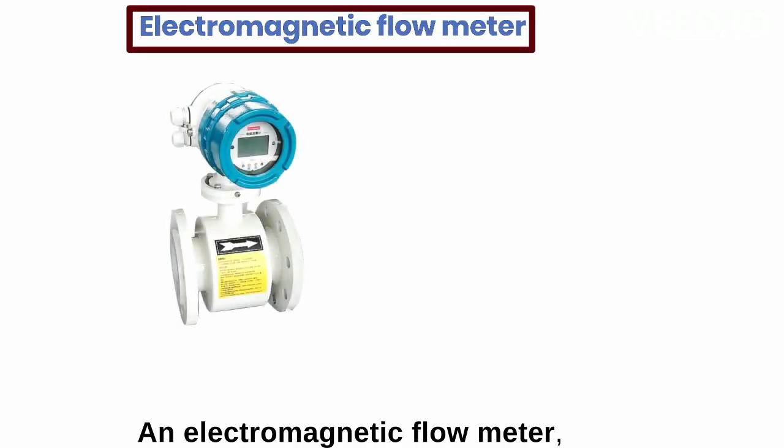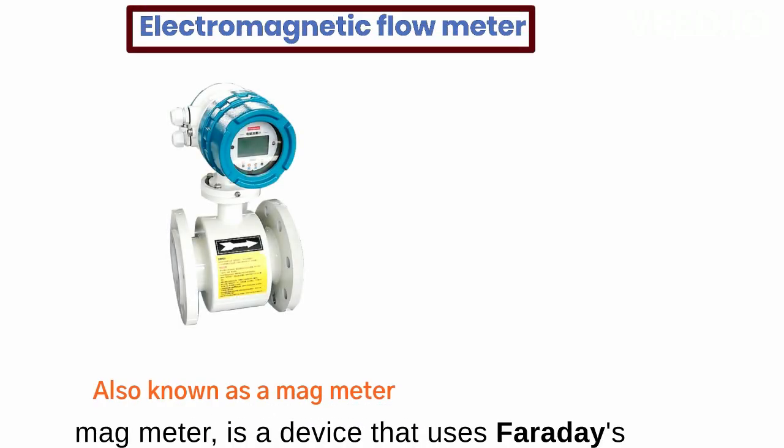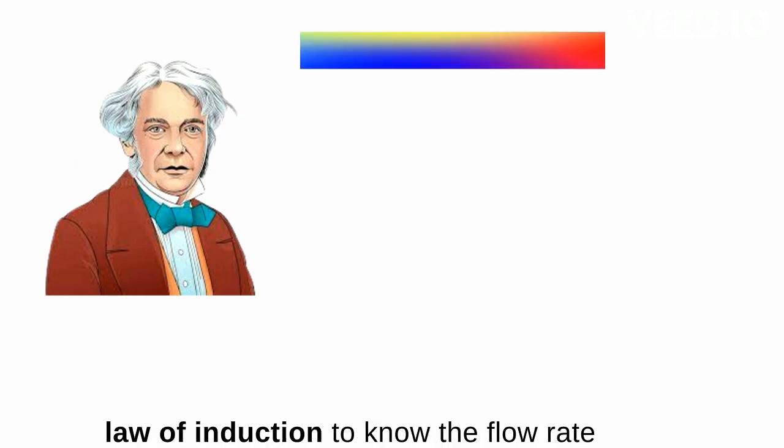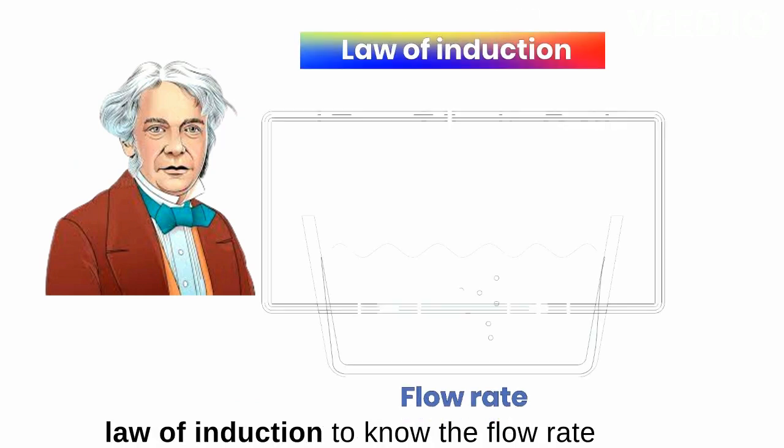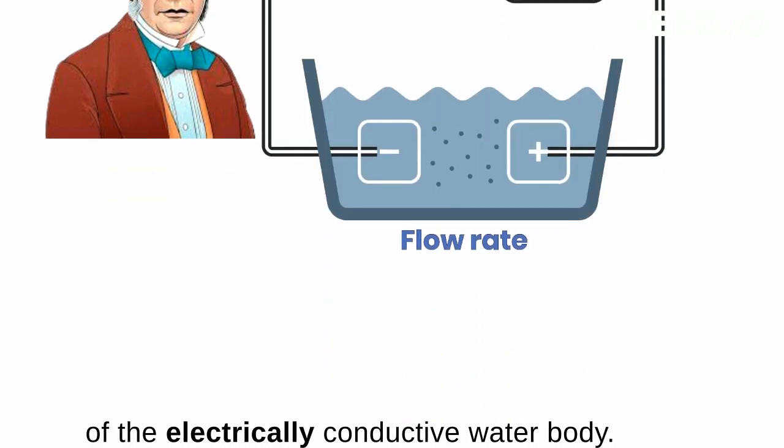An electromagnetic flow meter, also known as a magmeter, is a device that uses Faraday's law of induction to measure the flow rate of electrically conductive fluids.